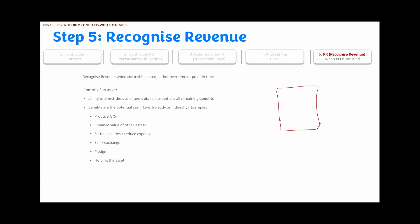We have now gone through four steps: identifying the contract, identifying the performance obligations, determining the transaction price, and allocating the transaction price to each performance obligation. Now we come to the last step — recognizing revenue. Revenue can be recognized when control is passed on, either over a period of time or at a point in time. Control of an asset is the ability to direct the use of and obtain substantially all the remaining benefits from that asset.